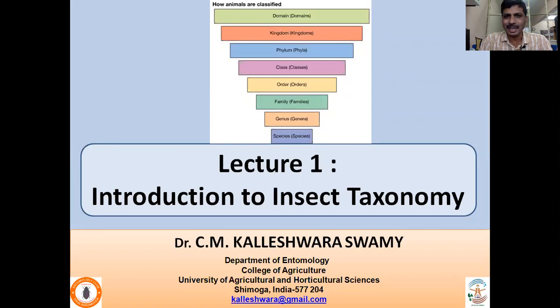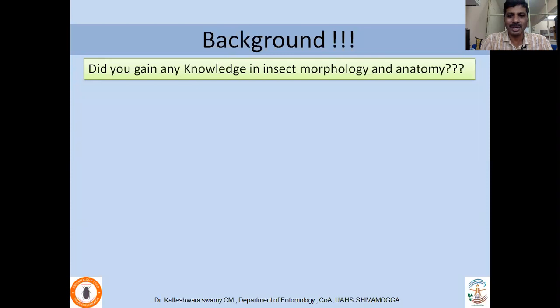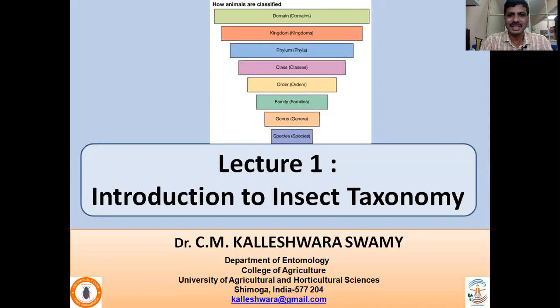Since maybe your schooling days, you have been hearing these terminologies — Phylum, Class, Order, Family, Genus, Species. These are the nomenclatures, the names or terminologies used in taxonomy. With this basic idea, you will get into Insect Taxonomy.